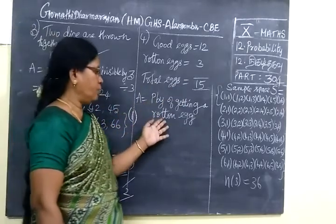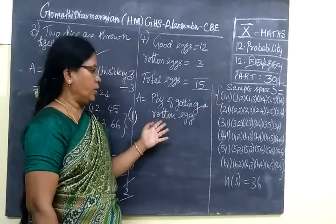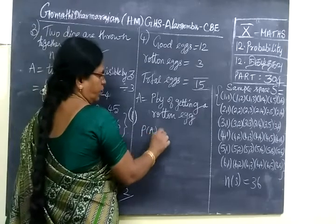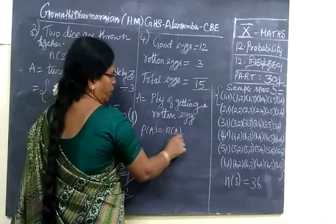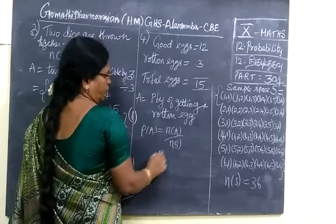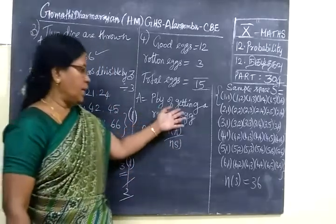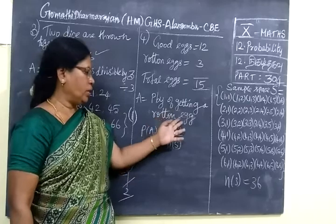So we are going to find probability of getting a rotten egg. We are selecting a rotten egg. So what is the probability for that? So P of A equal to N of A by N of S.